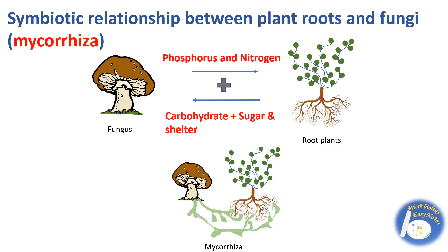Some fungi live in a symbiotic relationship with plant roots. This relationship between plant and fungi is called mycorrhiza. Fungi provide more surface area to the roots of plants for absorbing nutrients like phosphorus and nitrogen. In return, fungi get carbohydrates, sugar, and shelter from the plants.